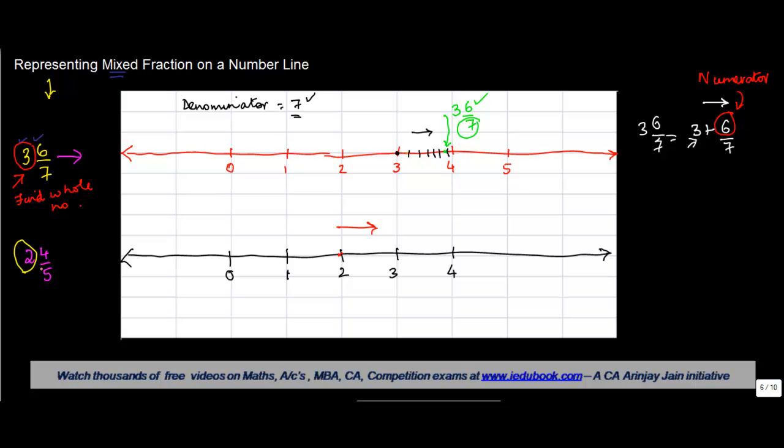What is the denominator? The denominator is 5, hence we will divide the distance between 2 and 3 into 5 equal parts. Let's say 1, 2, 3, 4, 5. You can also number these as 1, 2, 3, 4, 5.